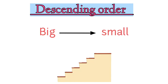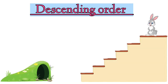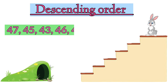When we move from upstairs to downstairs it is called descending order. Always remember that in descending order the numbers always keep on decreasing. Now, after eating the carrot, Mr. Bunny wants to go down to get back home, but for that we need to help him by arranging the numbers in descending order. The numbers are 47, 45, 43, 46, 44. Children, which number do you think will come on top? Yes, the greatest number will come on top, so the greatest number is 47.